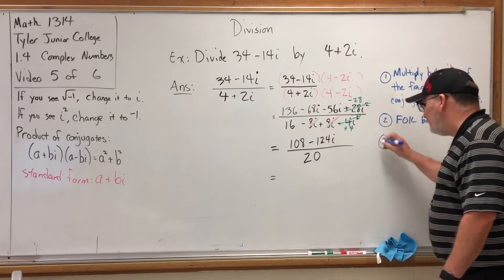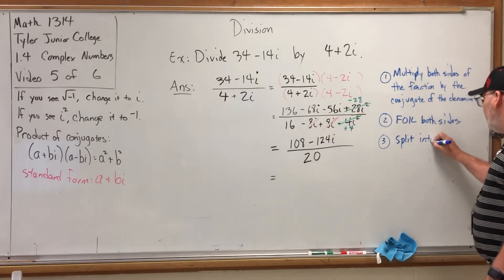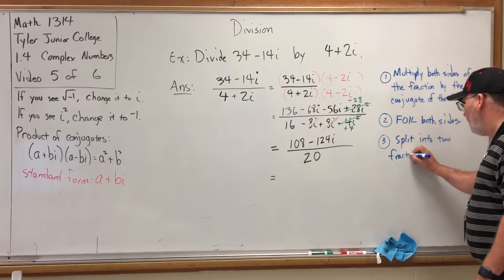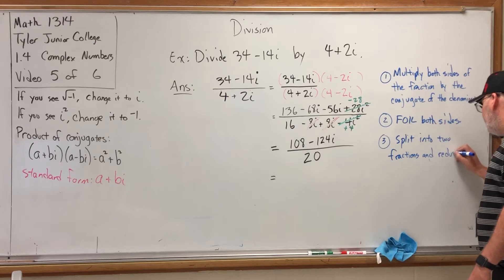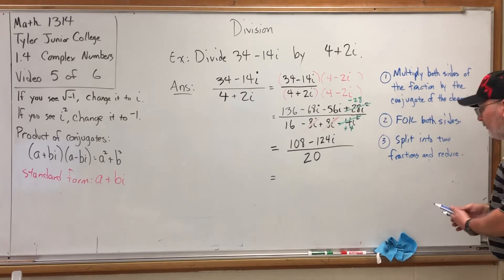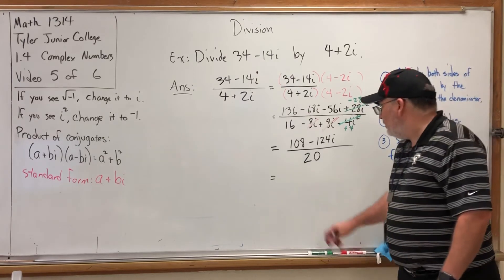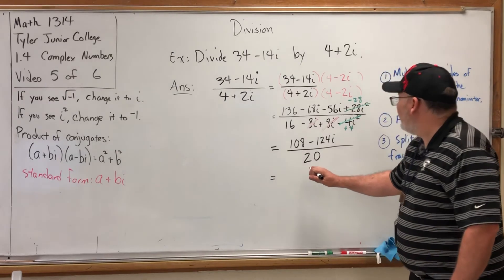At this point we've almost got an answer in the form that we want: a + bi. So all we have to do at this point is split into two fractions and reduce.